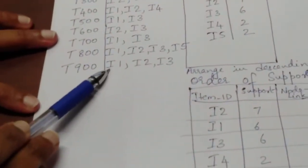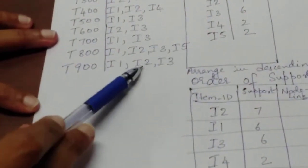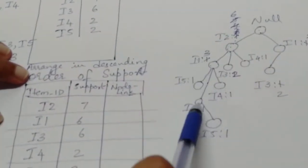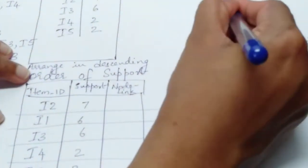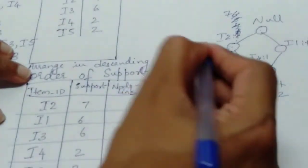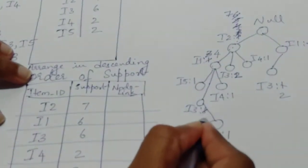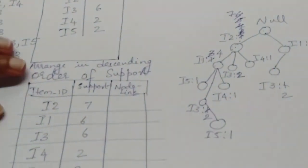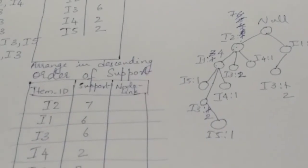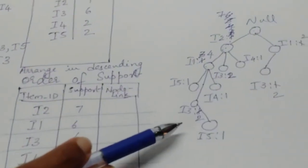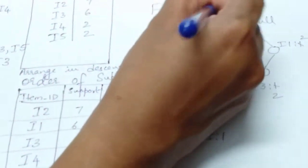The ninth transaction is I1, I2, I3, reordered to I2, I1, I3. We already have I2, I1, and I3 on that path. So the support is simply updated: I2 becomes 7, I1 becomes 4, and that I3 becomes 2. Now we have our complete FP tree.